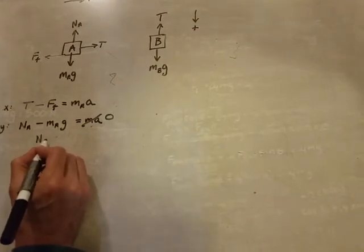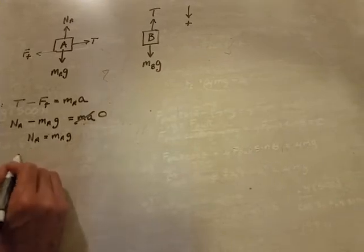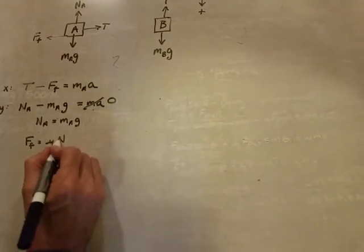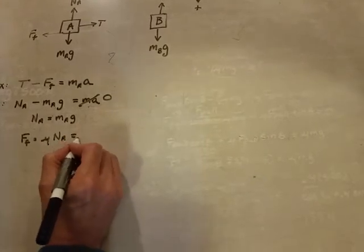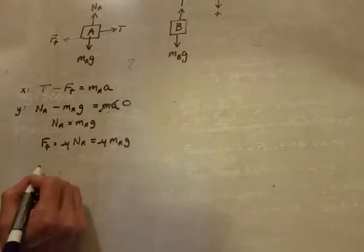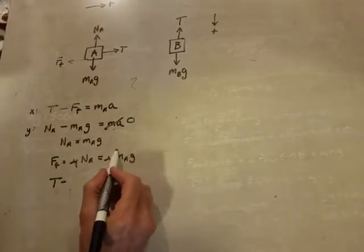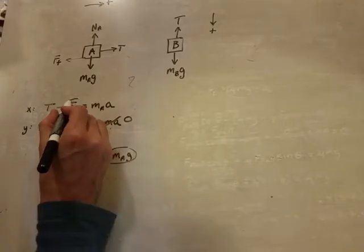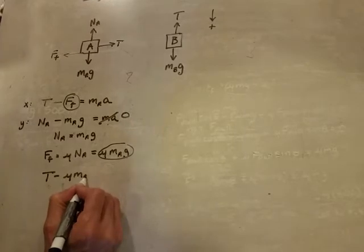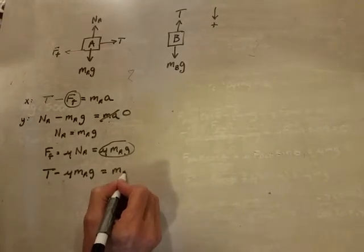So we know the normal force is equal to MAG. The friction force is going to be equal to mu times the normal force, so that equals mu MAG. That means tension minus mu MAG is equal to MAA. And I can solve for T: mu MAG plus MAA.